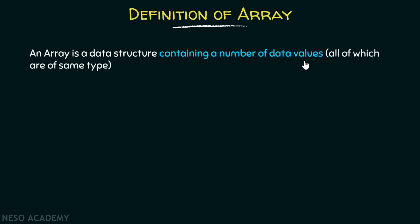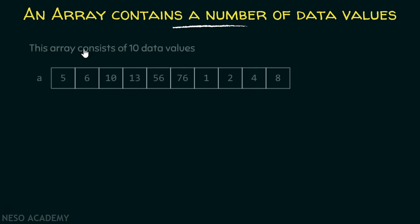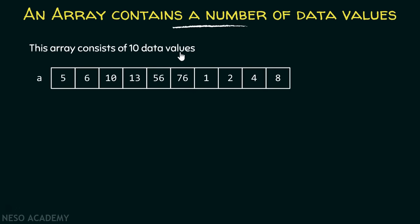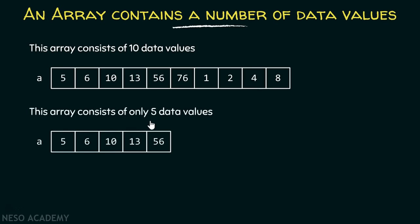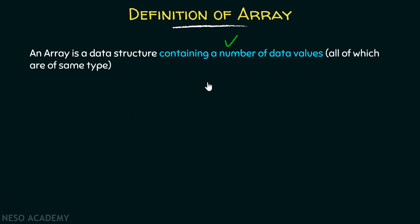The second part of the definition says it contains a number of data values. This array consists of 10 data values, all of which are integers, and each value is stored in a separate block of memory. Similarly, this array contains 5 data values, again all of integer type. So an array consists of a number of data values.